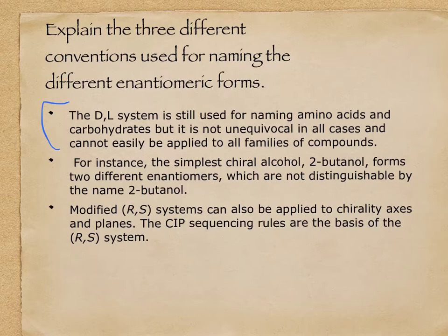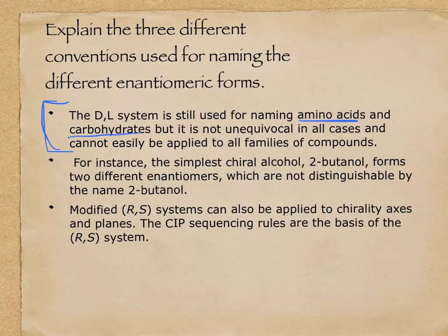The D and L system uses a small capital D and small capital L. It is used for naming most of our amino acids and most of our carbohydrates. It doesn't work universally, but it can apply to all families of compounds.